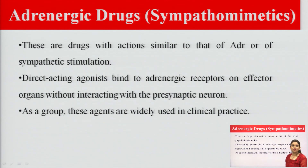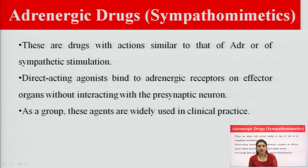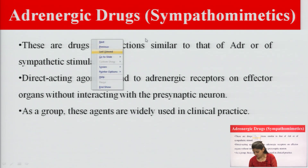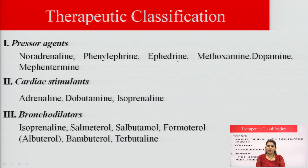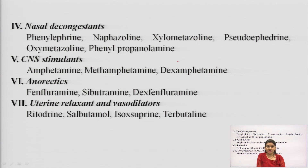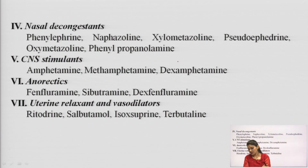These drugs are known as adrenergic or sympathomimetic drugs because they mimic the effect of adrenaline. The classification includes: pressor agents (noradrenaline, phenylephrine); cardiac stimulants (adrenaline, dobutamine, isoprenaline); bronchodilators (isoprenaline, salbutamol); nasal decongestants (phenylephrine); CNS stimulants (amphetamine); anorectic drugs; and uterine relaxants and vasodilators.